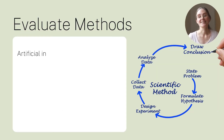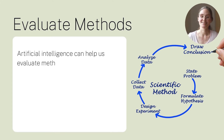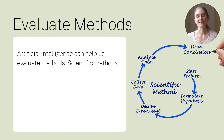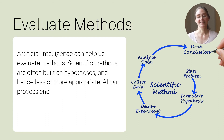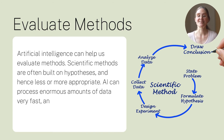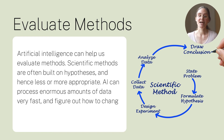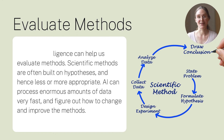Artificial intelligence can help us evaluate methods. Scientific methods are often built on hypotheses and hence less or more appropriate. Artificial intelligence can process enormous amounts of data very fast and figure out how to change and improve the methods.